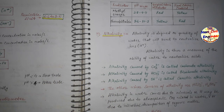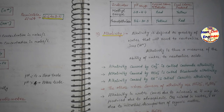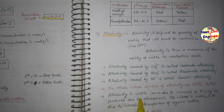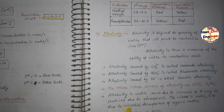Alkalinity in water comes due to minerals, and it may be produced due to atmospheric carbon dioxide mixed in water, and also due to microbial decomposition of organic matter. These are the main causes of alkalinity in water.